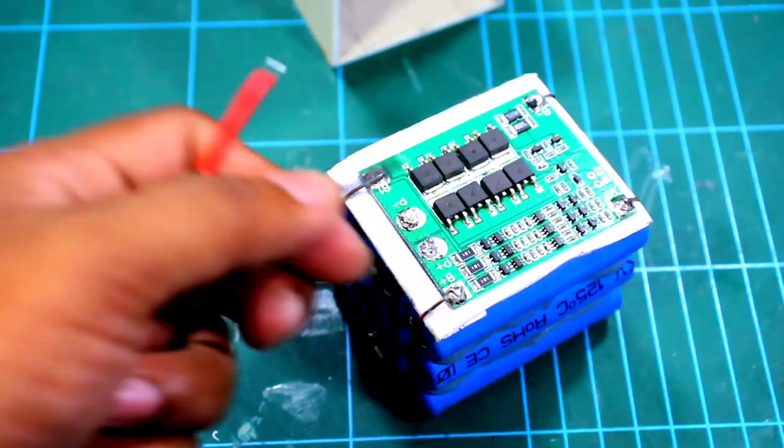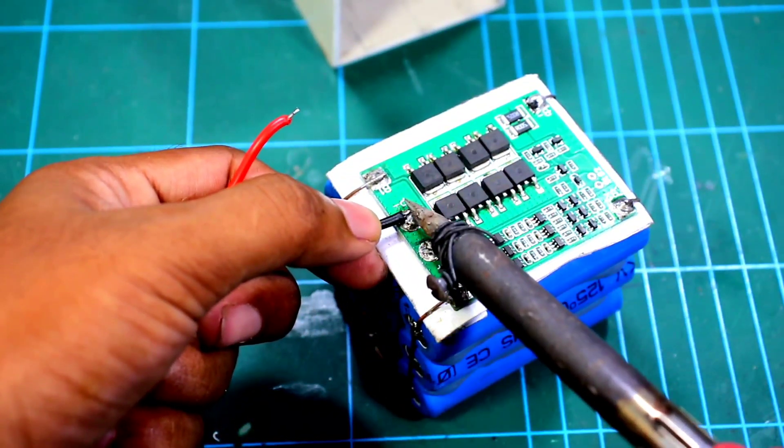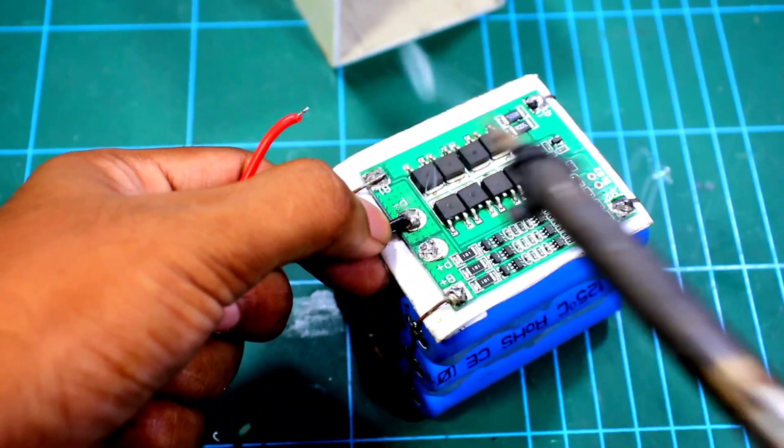The function of P positive and P negative of the BMS circuit is to take power input and power output.